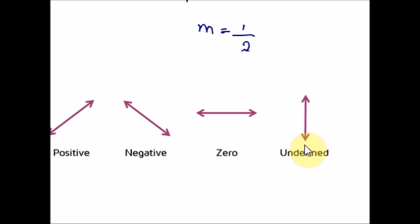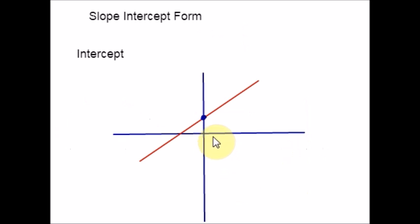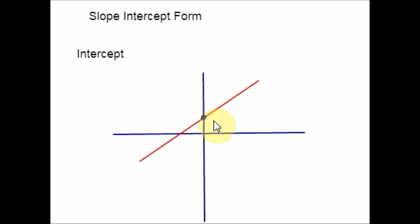Now let us see what is meant by an intercept. There are two axes on a coordinate plane: x and y — the x-axis and the y-axis. When a line crosses one of these axes, the point where it crosses is called an intercept. If it touches the x-axis, we call it the x-intercept. If it touches the y-axis, we call it the y-intercept.